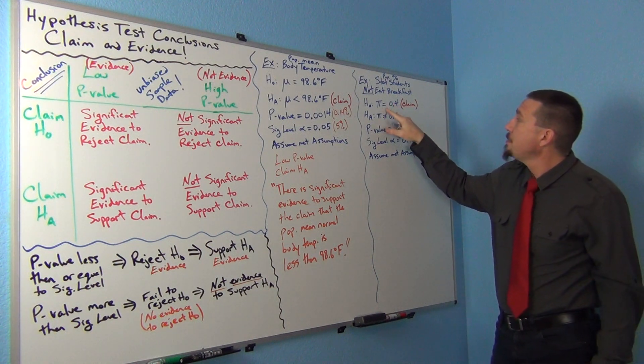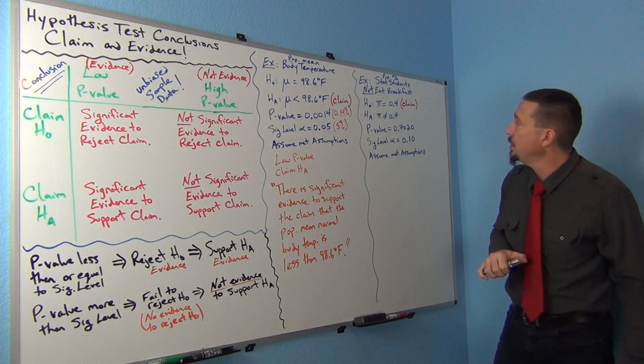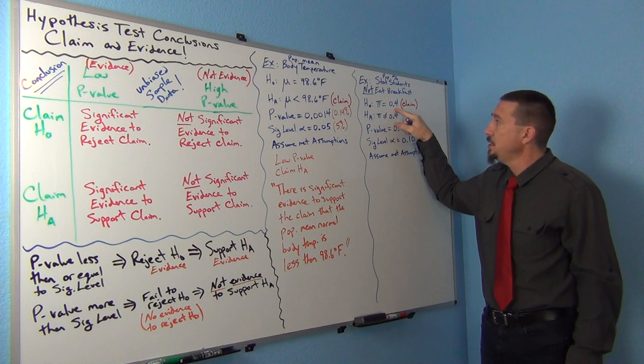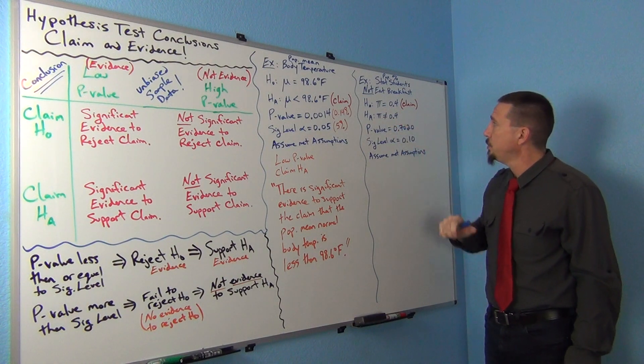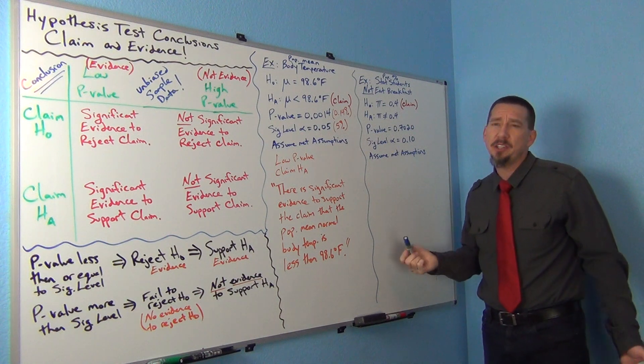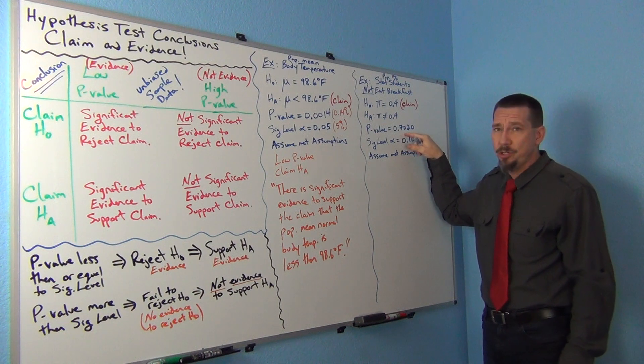So the opposite of that, the alternative would be not equal to 40%. So pi equals 0.4 would be the null hypothesis, and pi is not equal to 0.4 was the alternative. So this was like a two-tailed, one-population proportion test. Now, my p-value came out to 0.702.